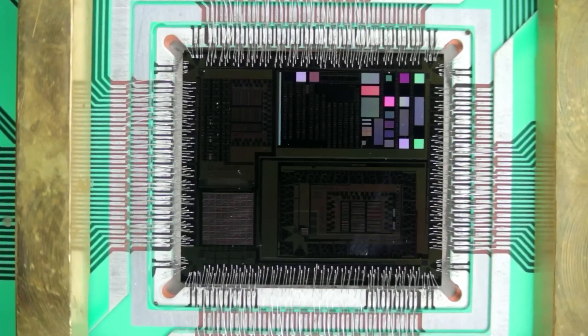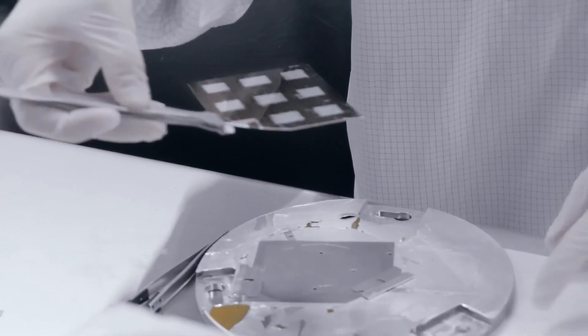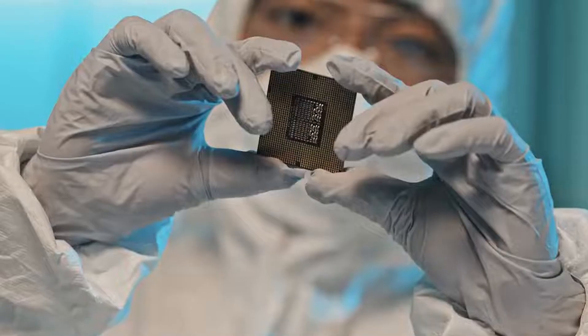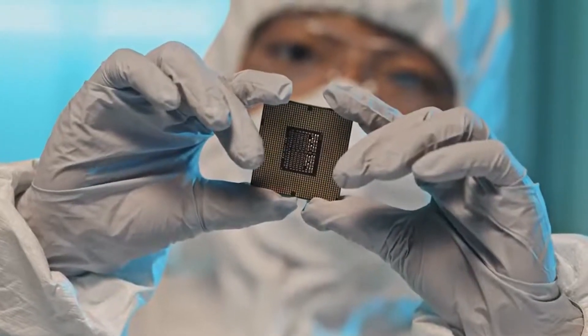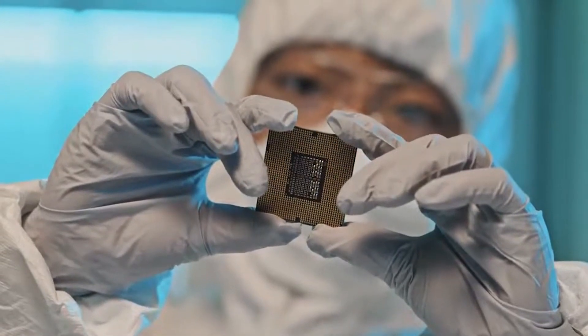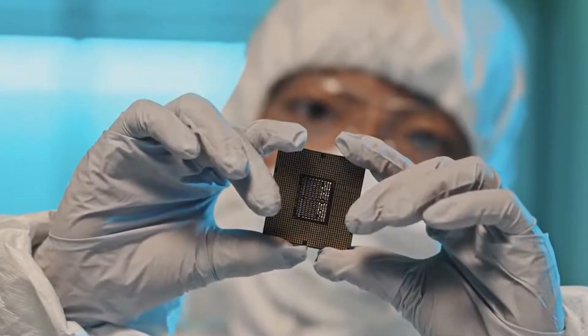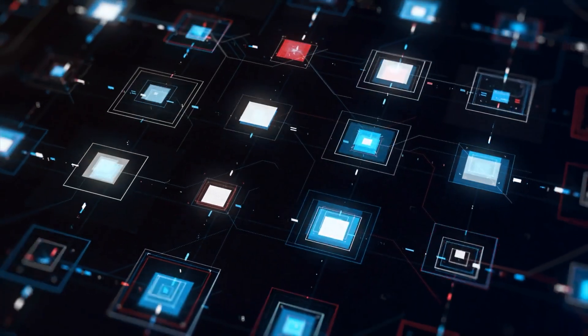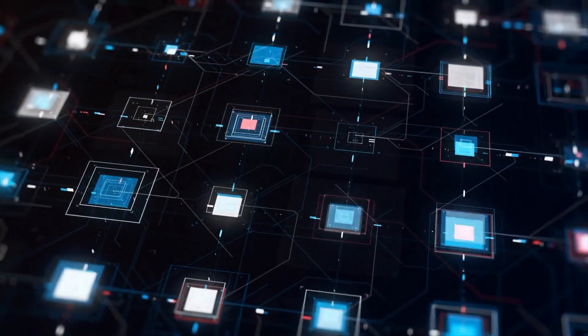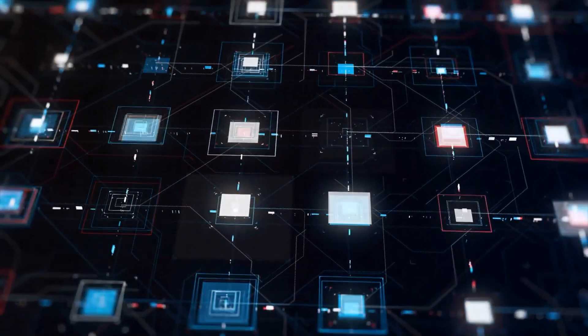Similarly, a random quantum circuit is a sequence of quantum gates applied to qubits in a processor. The gates are chosen in a random pattern to create a high degree of complexity in the system's quantum state. The goal is to run the circuit on a quantum computer and measure the outputs. These outputs are probabilistic, meaning they follow a specific distribution governed by quantum mechanics.